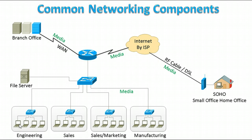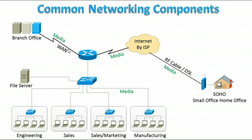For example, if someone from engineering wants to talk to the branch office, the packet travels through the switches to the router. The router determines that the user wants to communicate with the branch office, then based on the routing table and policy, forwards the packet to the appropriate media toward the branch office.